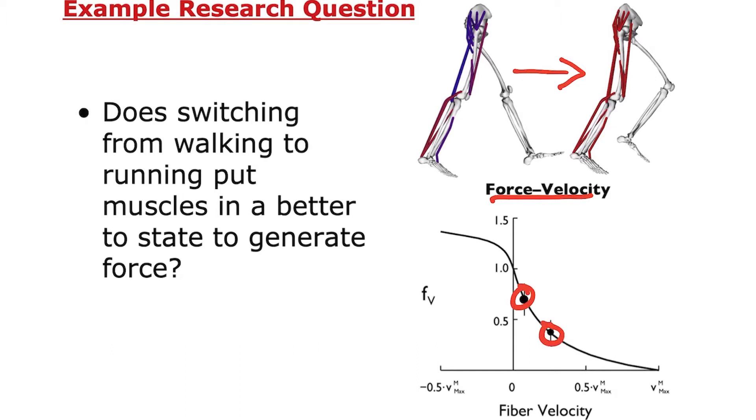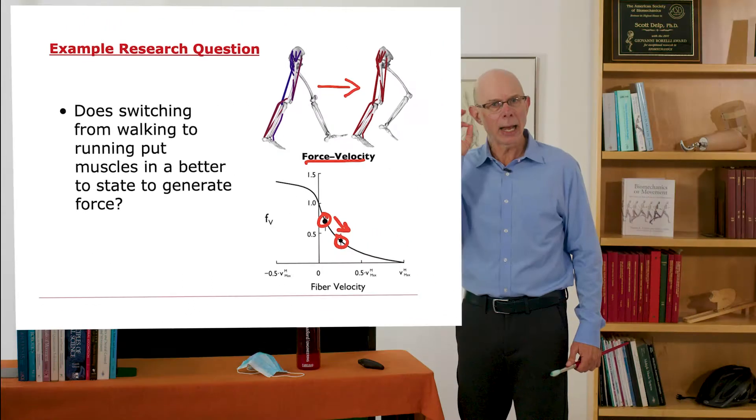If I have this hypothesis, then the muscle is actually slowing down, operating at a lower velocity when I switch from walking to running. And maybe that is an energy saving mechanism. Let's say I have that idea.